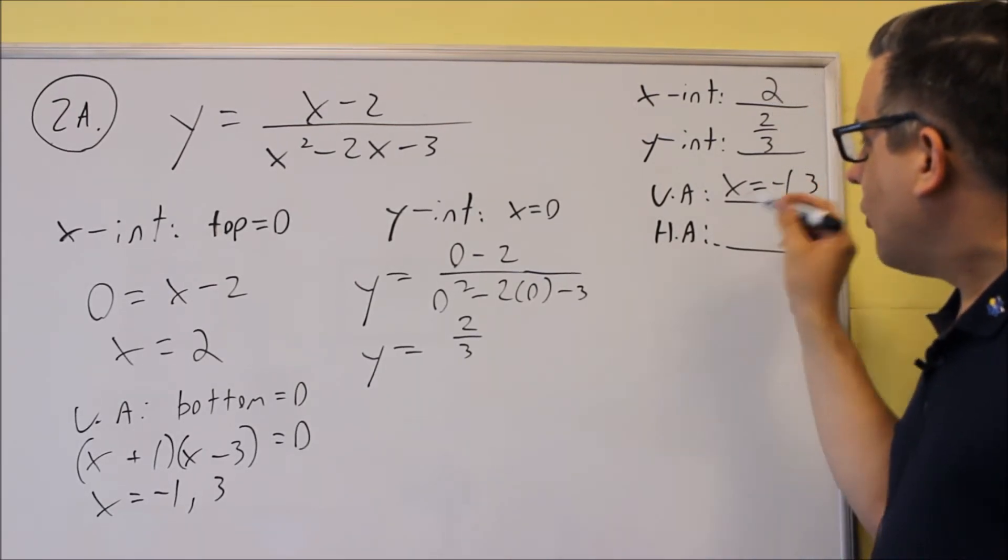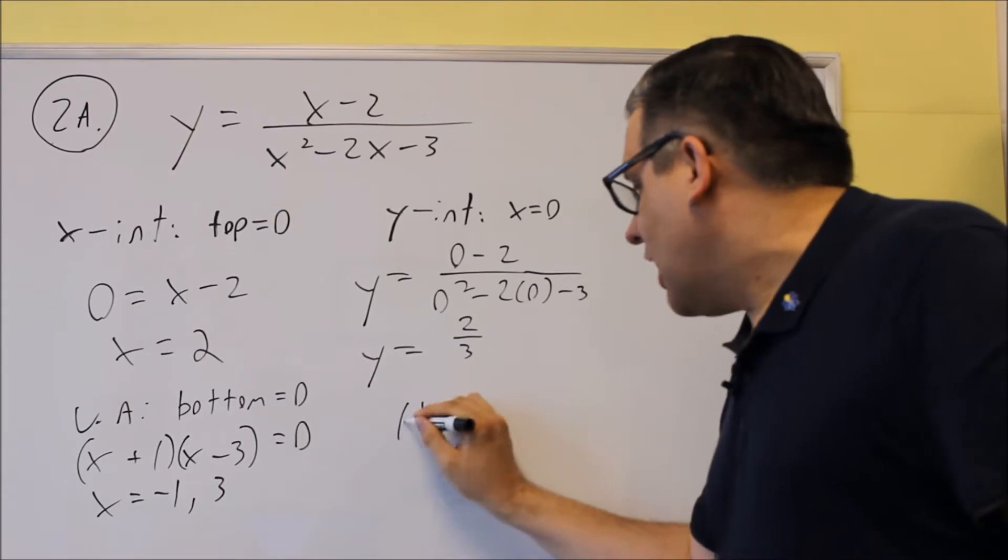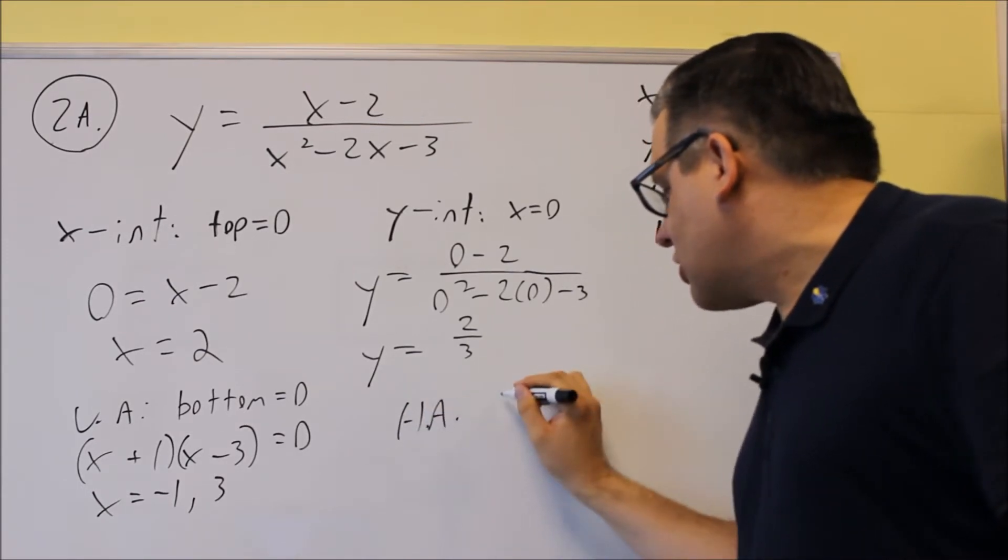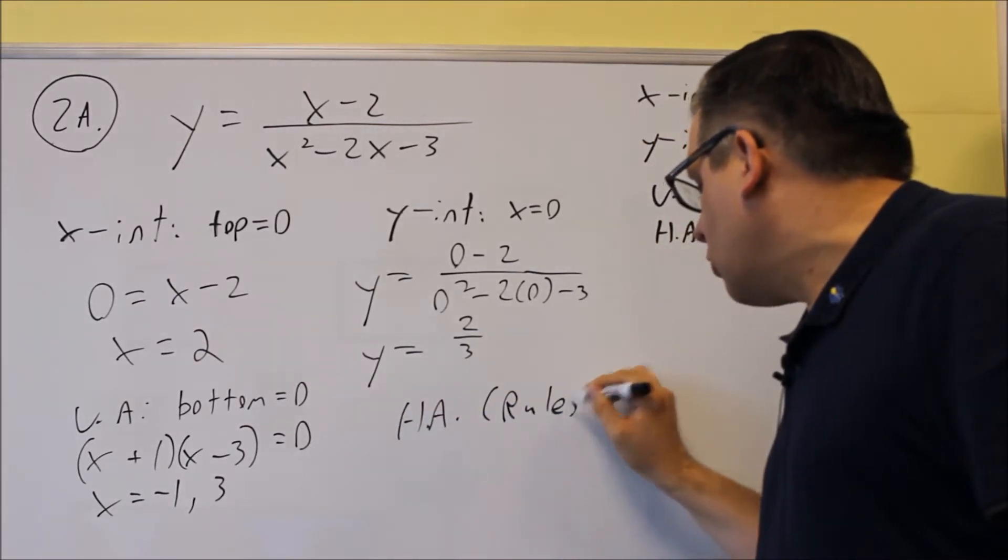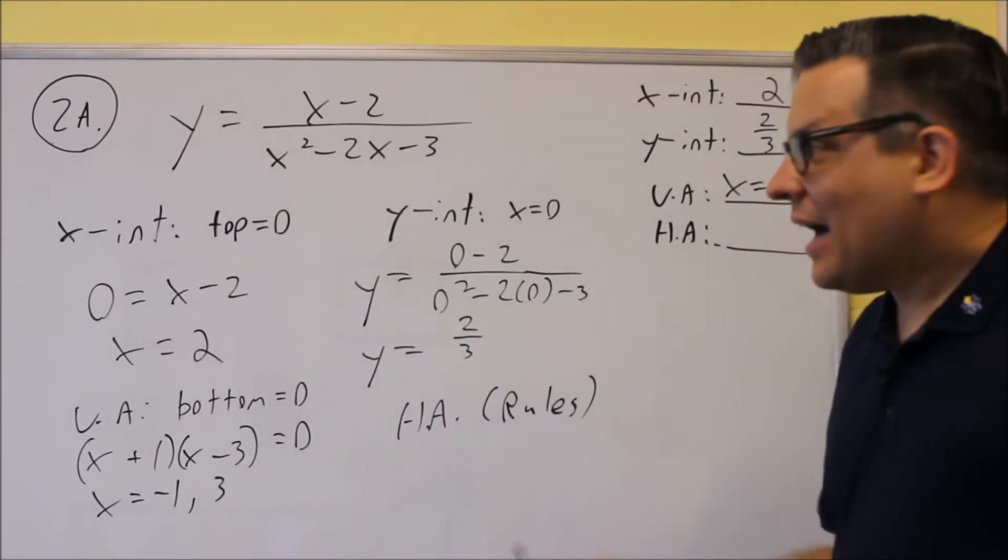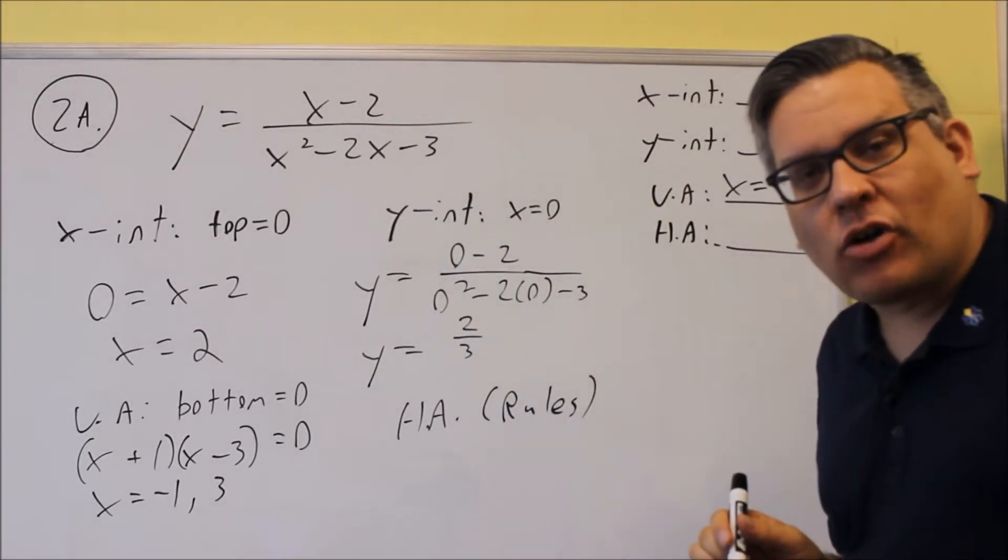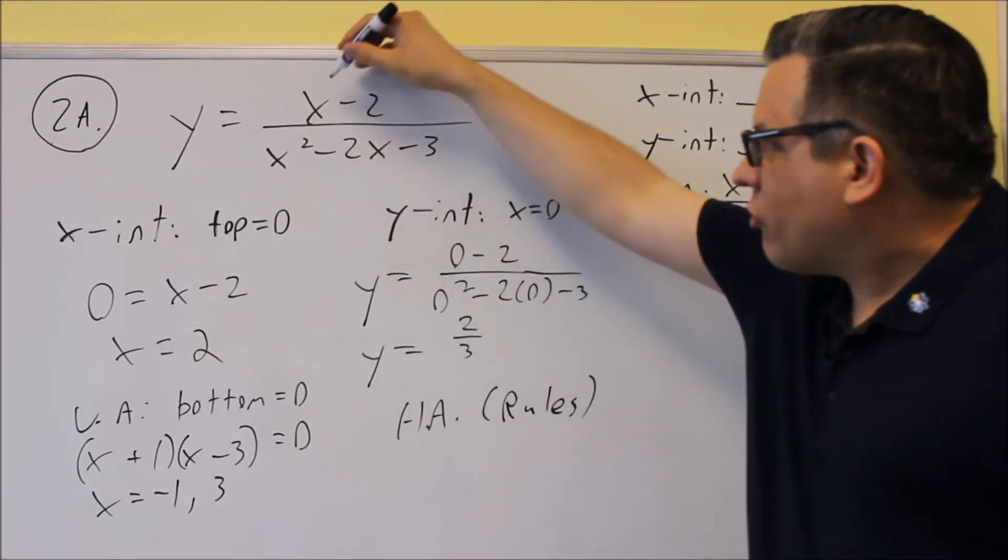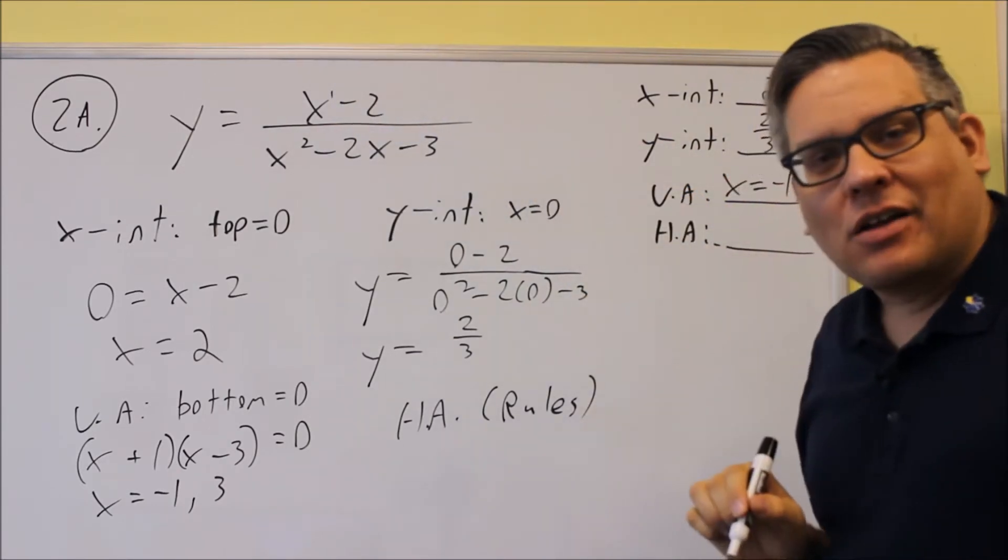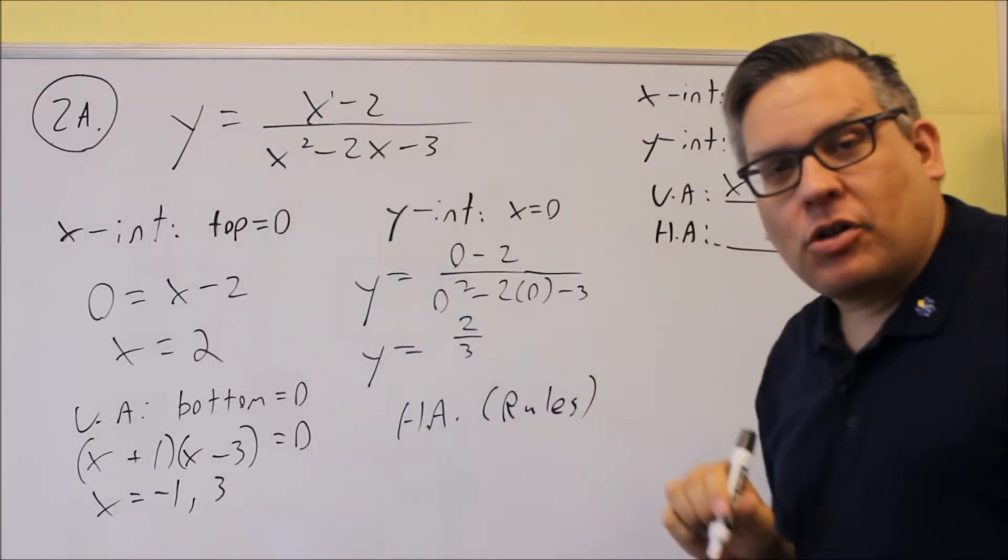For the horizontal one, this requires some rules. And the rules have to do with the highest power on top and the highest power on bottom. Now the situation we have set up here is you've got a higher power on the bottom than you do on the top.